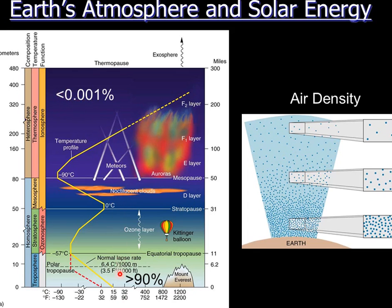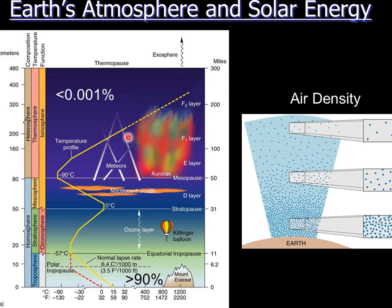This is what our atmosphere looks like. If you want to go fly in the space shuttle and go out to space, space is roughly right here at the break between the mesosphere and the thermosphere — it's 50 miles up. That's how thin it is up here.